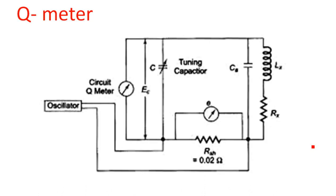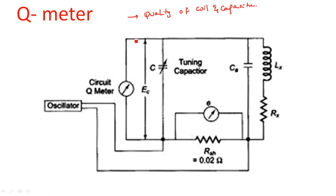The next important concept is the Q meter. A Q meter is an instrument used to measure the quality of a coil or the quality of a capacitor — that is, the quality factor of an inductor or capacitor. The Q meter is based on the principle of series resonance.